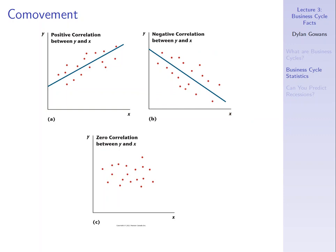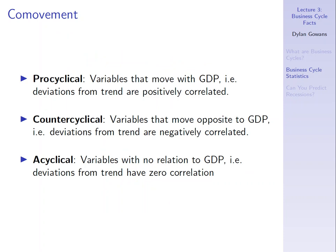If there's no relationship at all between movements in GDP and another variable, we say there's zero correlation. We also use specific terms: when deviations from trend are positively correlated with GDP, that variable is pro-cyclical — it follows the GDP cycle. When negatively correlated, it's counter-cyclical. And if there's no correlation, we call it acyclical — it doesn't follow the cycle at all.